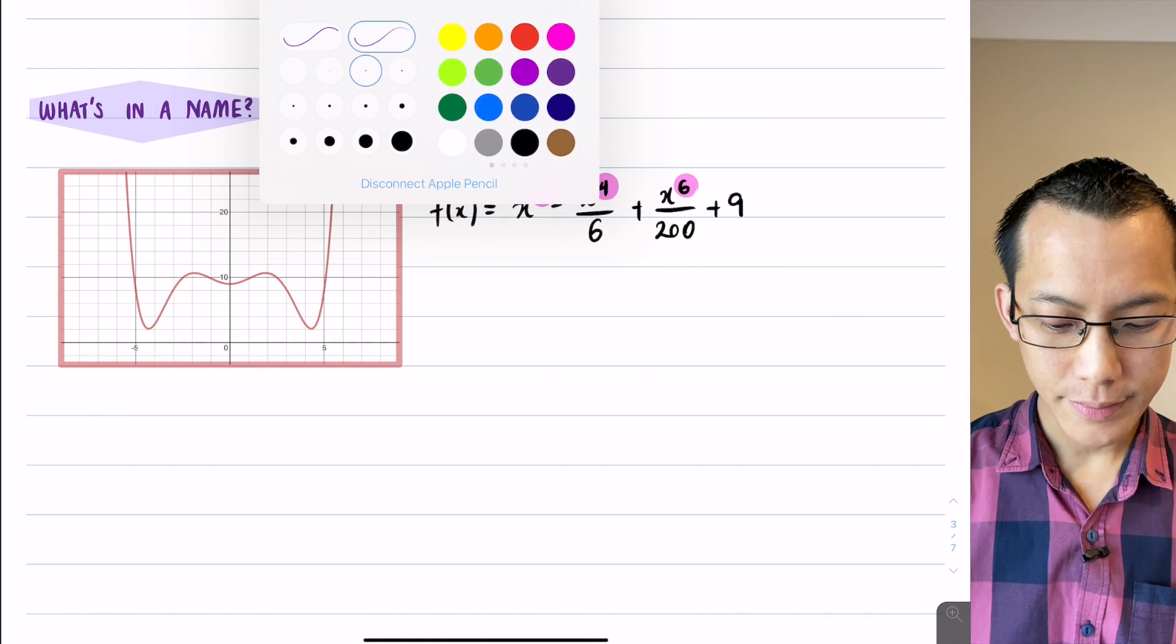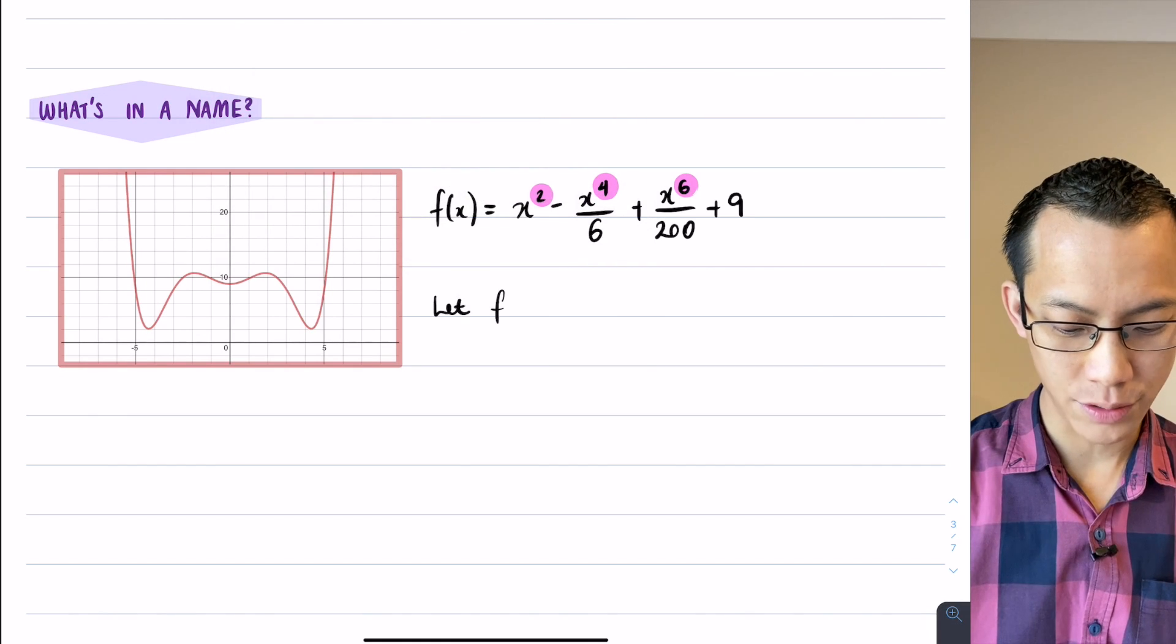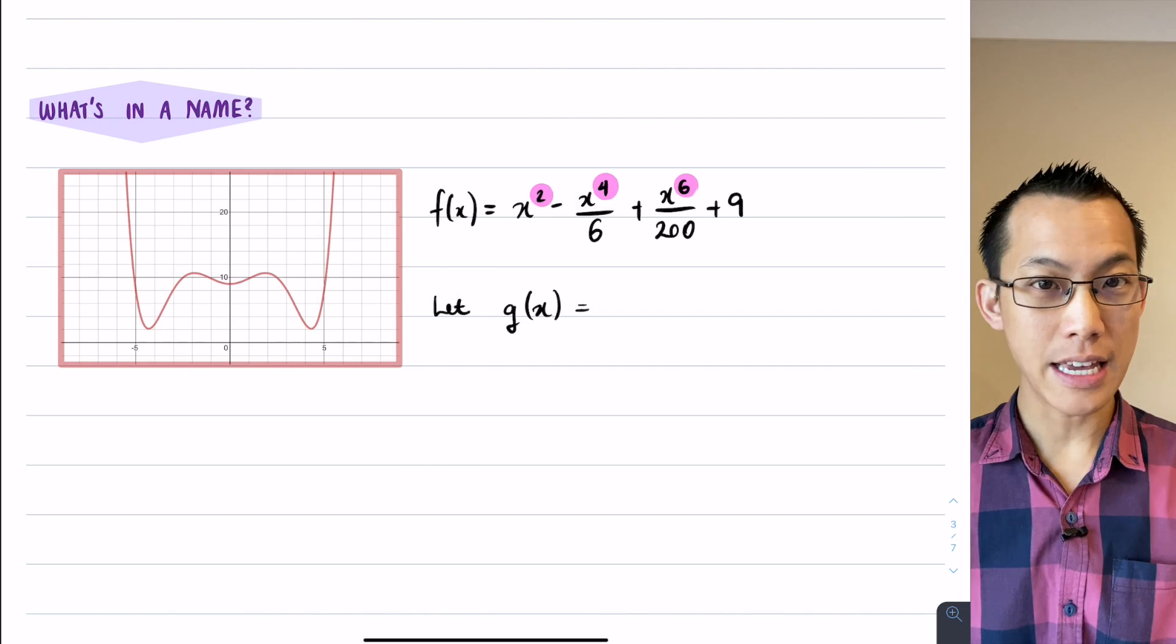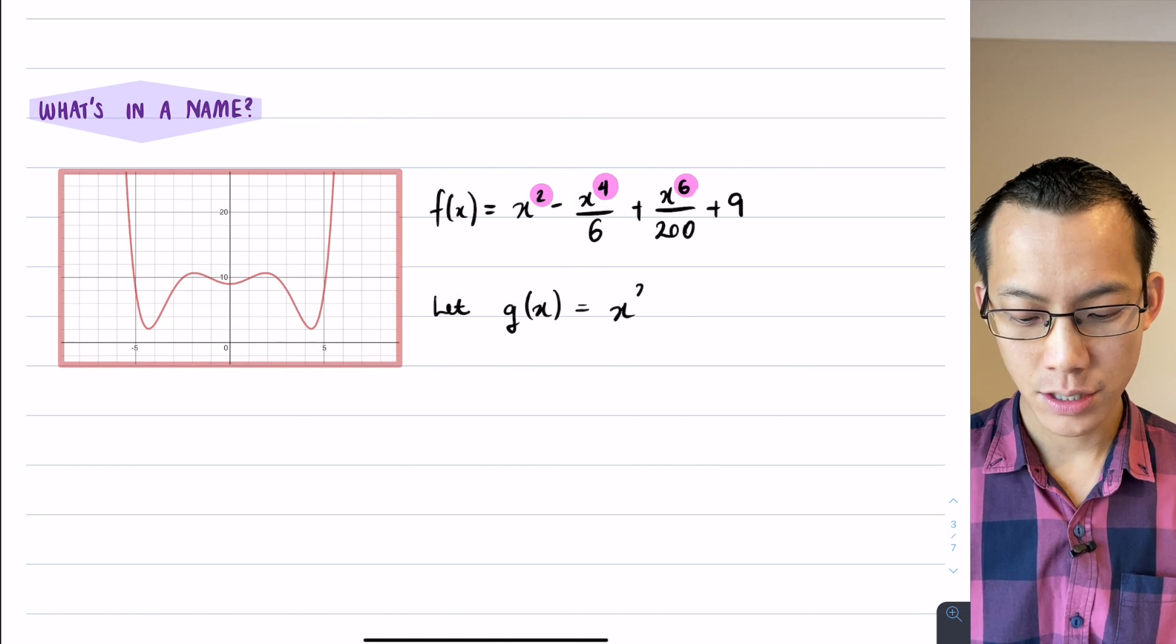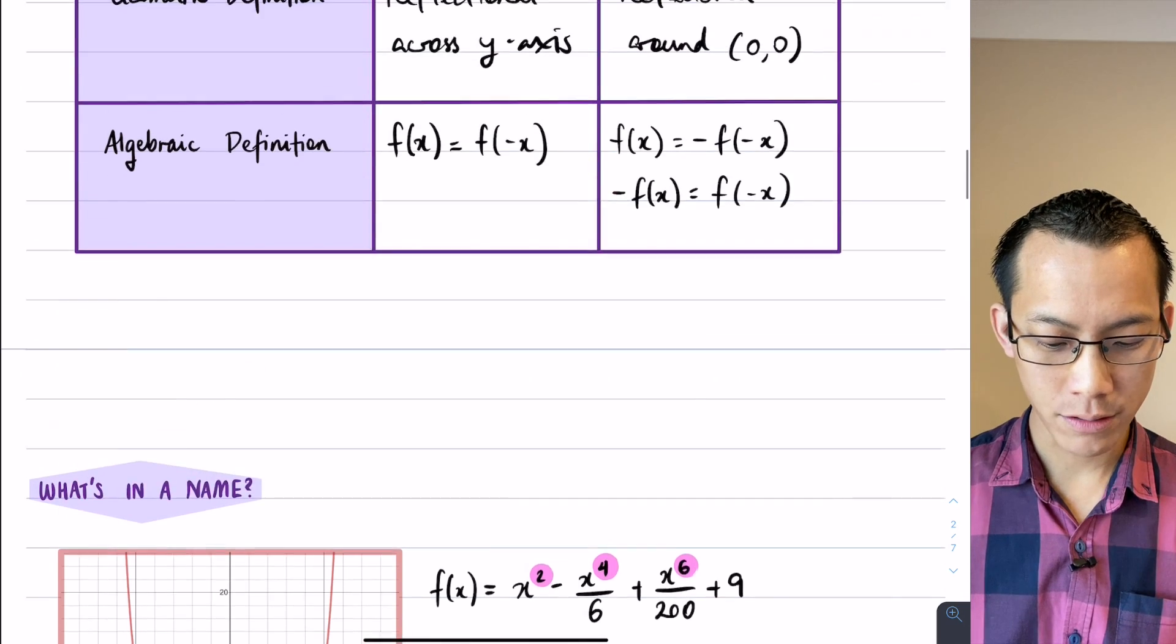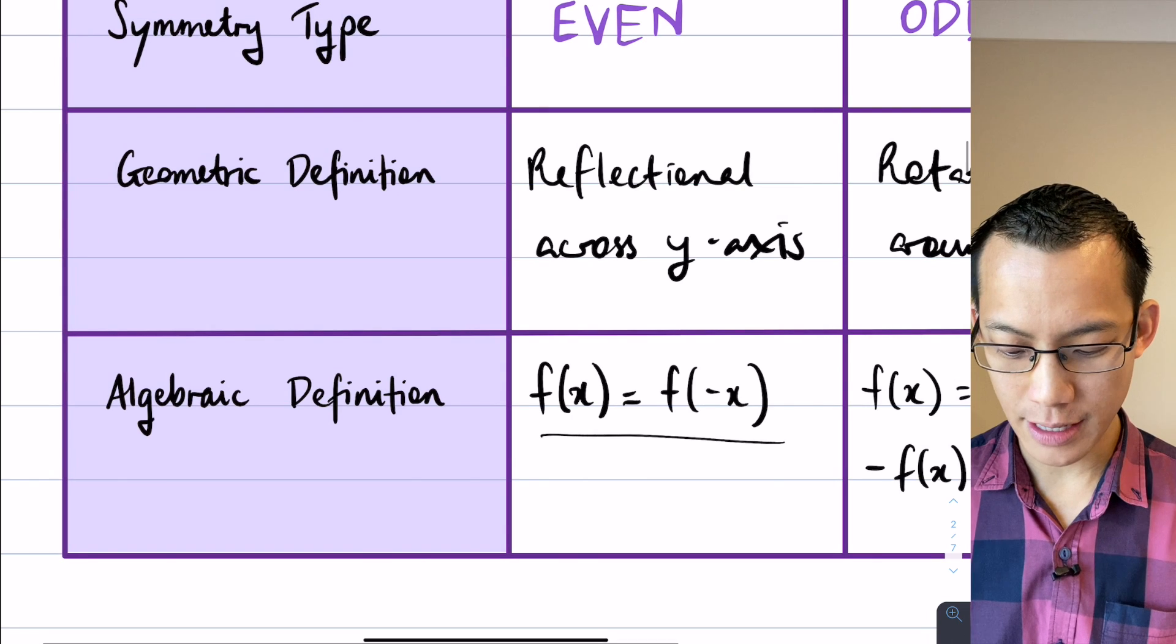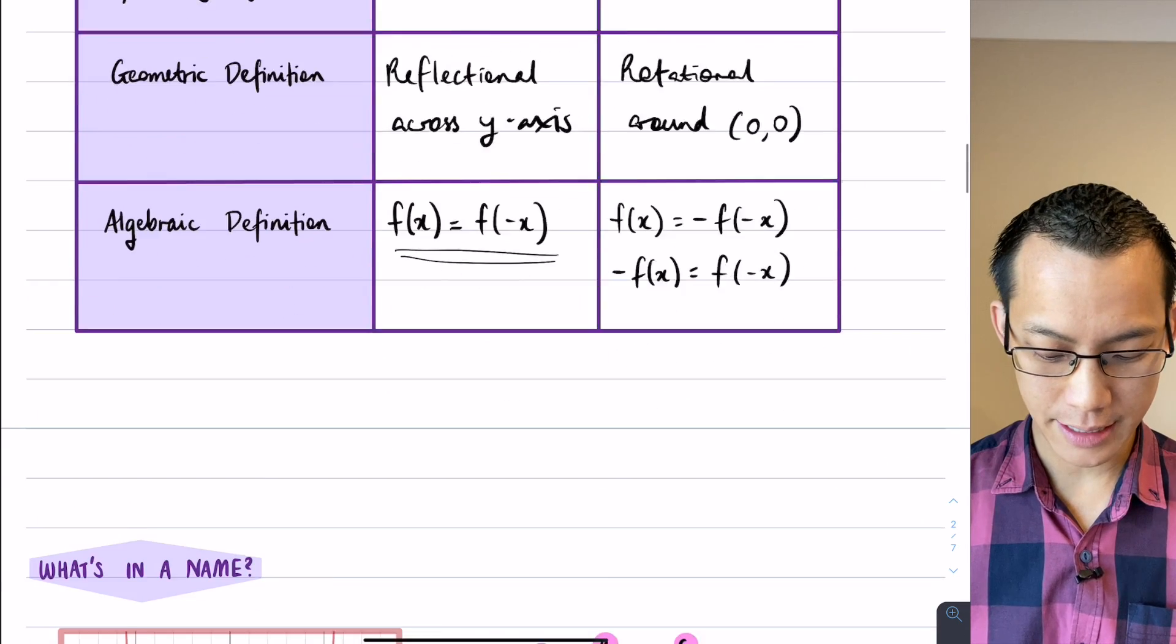If I just give you, let's suppose let f of x, actually I just used f of x so let's come up with a new name, let g of x equal the simplest even function that most people know about with an even power is x squared. Let's test out our algebraic definition here. If I go back and I say, well if I've got an even function, it should obey this thing here, right? f of x should equal f of negative x. So I'm just going to test that out.